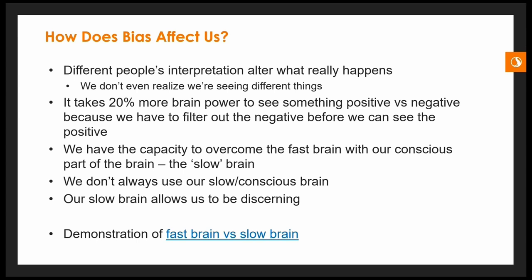Different people's interpretations alter what they experience. We don't even realize we're seeing different things. It takes 20 percent more brain power to see something positive versus negative, because we literally have to filter out the negative before we can see the positive. That's the fast brain trying to keep us safe — it's going to look for danger and the negative. Our slow brain has to engage to say, 'Wait, that's actually not negative, it's a good thing.' The good news is we have the capacity to overcome the fast brain with our conscious slow brain, but the challenge is we don't always use it when we need to.